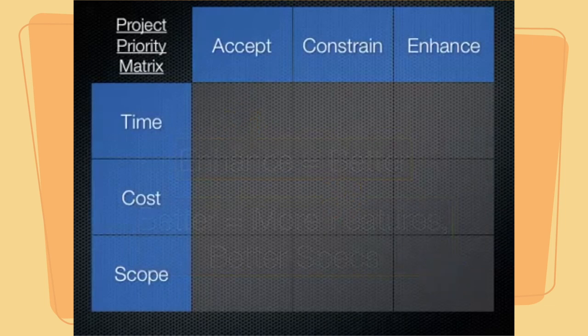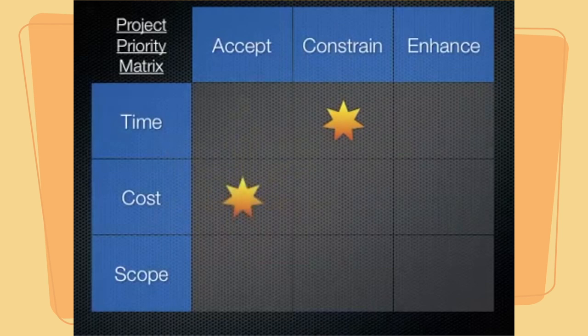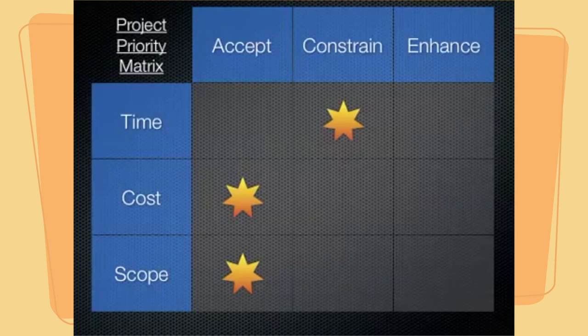Let's consider another example. In this example, we are going to constrain time, accept changes in cost, and also accept changes in scope. This is not atypical of something like a software development project, where we have a specific deadline to meet — perhaps releasing software at a trade show or event that impacts how well the product will sell. So it is vitally important that we constrain that time, and we are willing to accept changes to cost or scope.